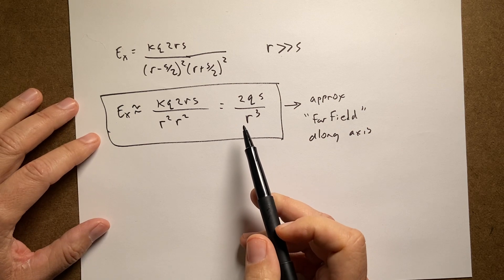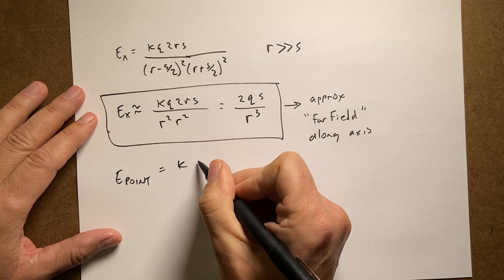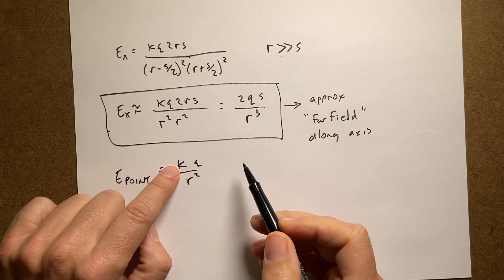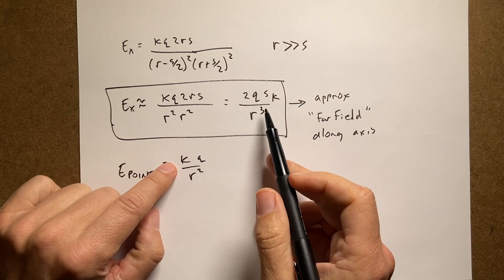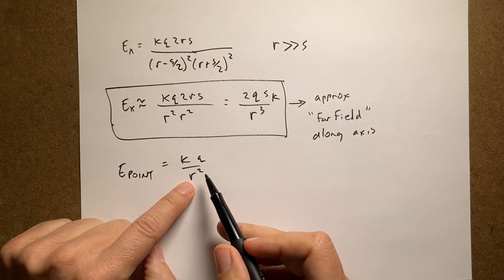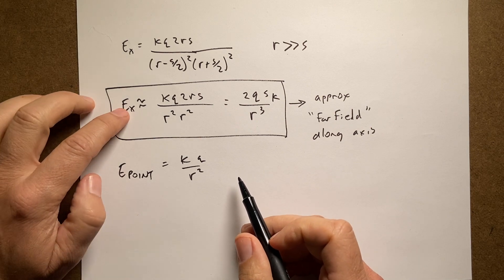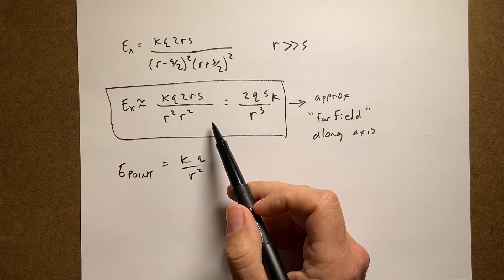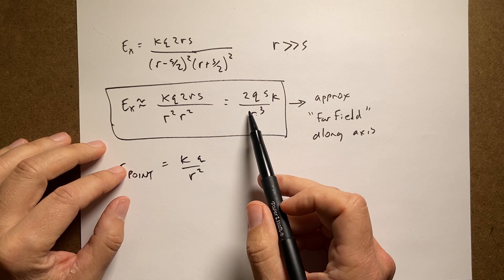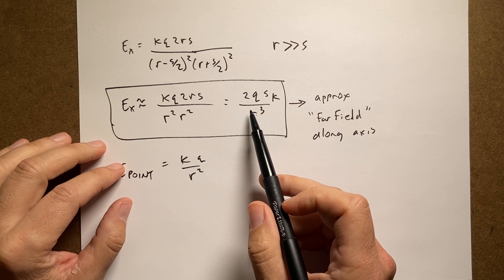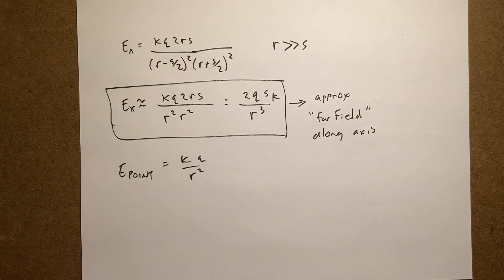Let's just check: does this have the same units as the electric field due to a point charge? The magnitude for a point charge is kq over r². So it should have k — it's got k. It should have q — it's got q. And it should be over meters squared. I have meters (from s) divided by meters cubed, so that works. As r gets really big, this should go to zero because I'm far away — and yes, it does go to zero. And as the distance between the charges s goes to zero, if they're right on top of each other, the electric field will be zero — and yes, as s goes to zero, this goes to zero. So this is a good expression.